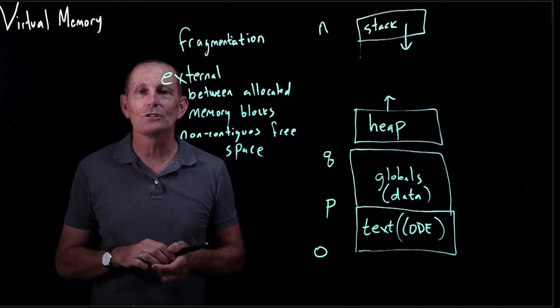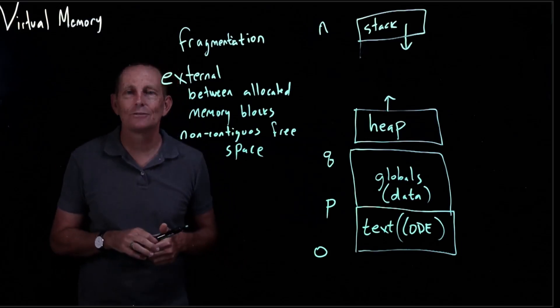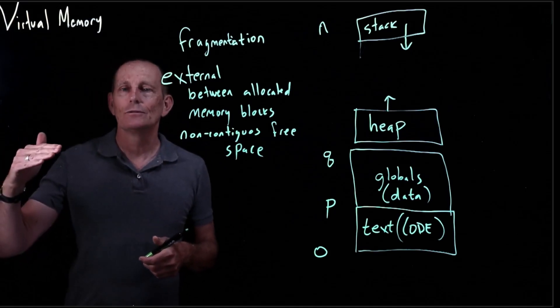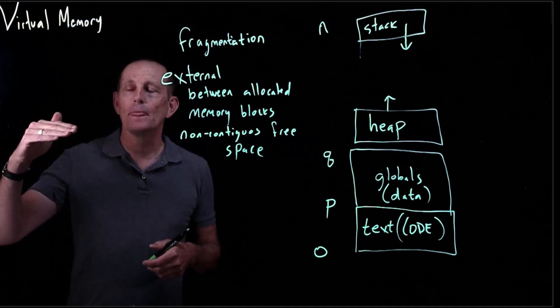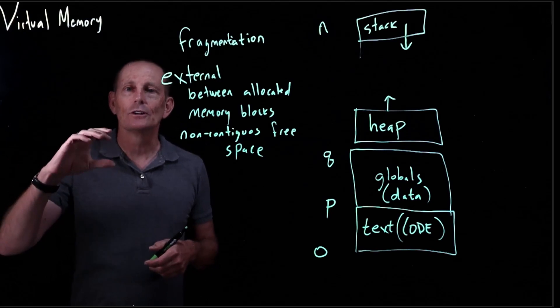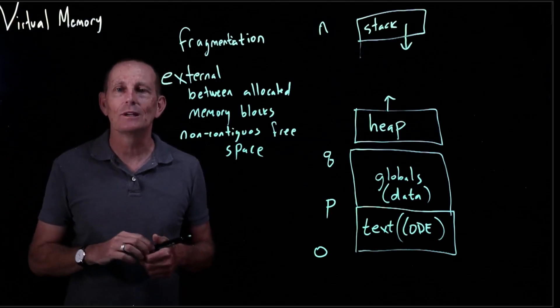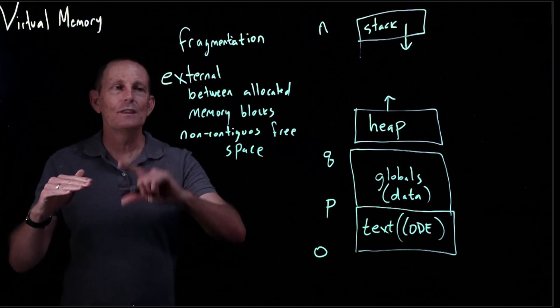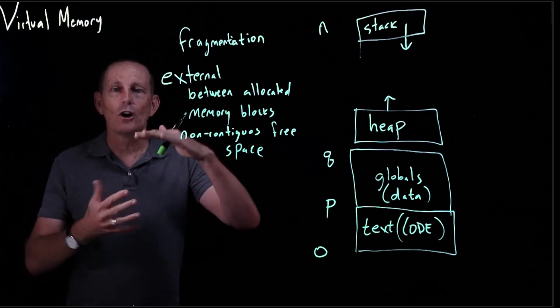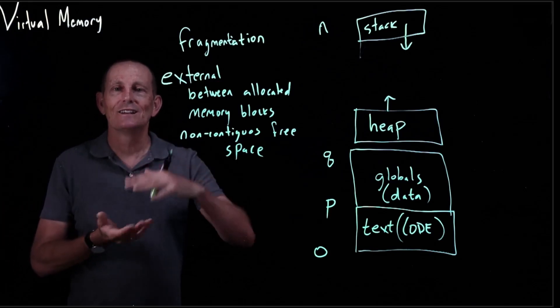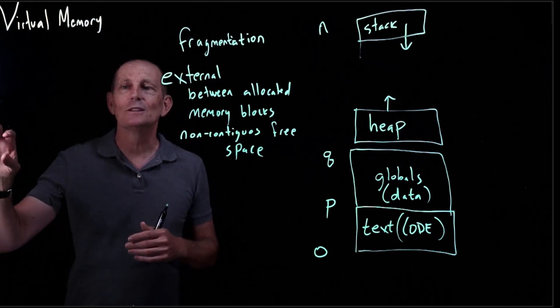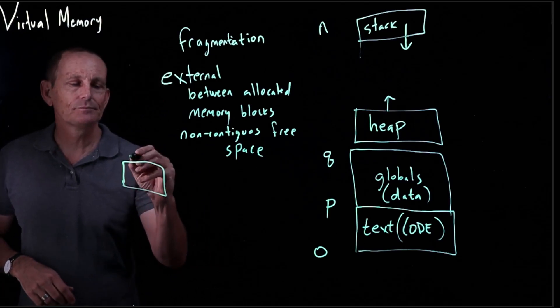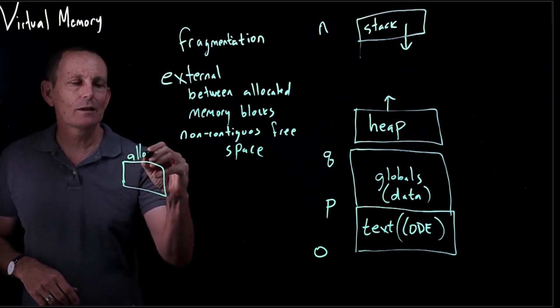On Mac and Windows, the solution to that, when memory was so tight back in the day, was you never stored, you rarely stored a raw pointer to an allocated piece of memory. You stored a pointer to a pointer. And then when this movement happened to coalesce free blocks, it updated the pointer to the pointer. So if this was a block of memory, this is an allocated block.